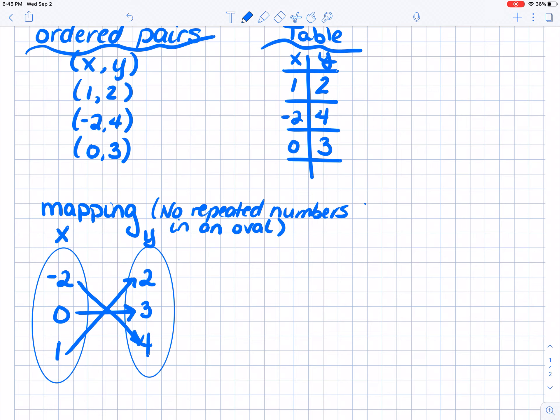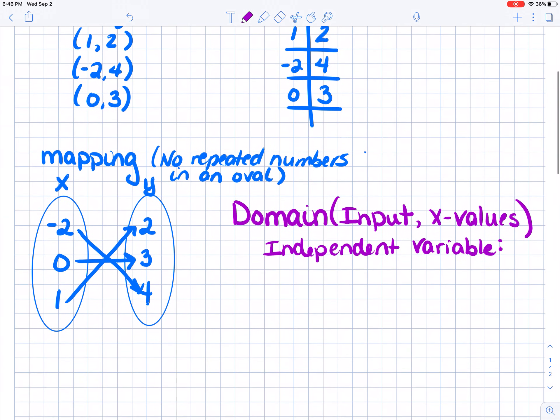Now there's two more things we need to talk about. We need to talk about the domain. And the domain is the input, or the X values, of a relation. And again, these don't get repeated. This is also called the independent variable. The way it is written, we use brackets that look like this. Again, I put them in least to greatest to make sure I don't repeat. Negative 2, 0, 1. They are our X values from least to greatest. So that is our domain.